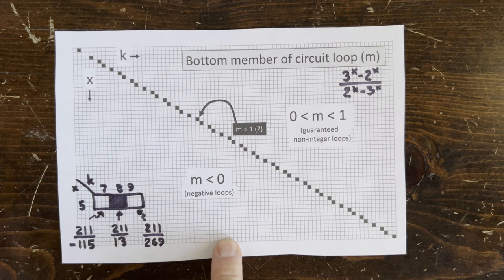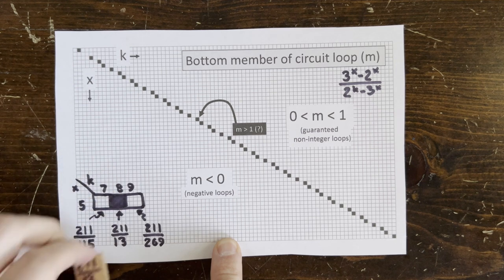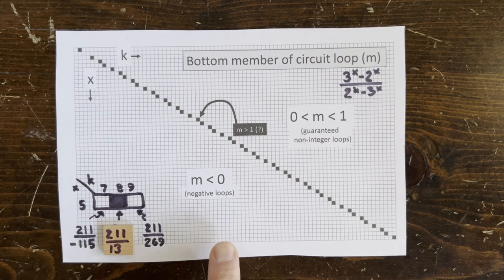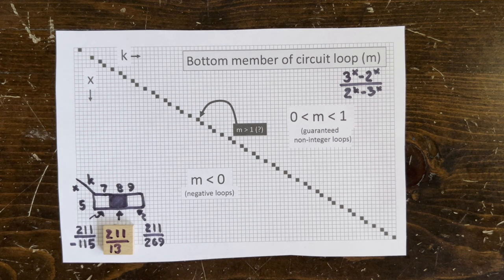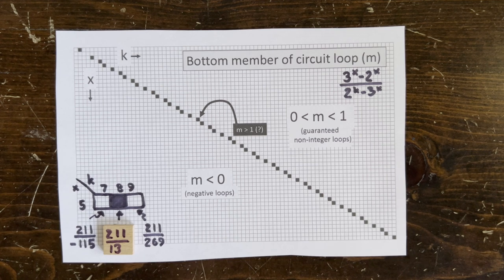So here's our old friend, x equals 5, k equals 8, m equals 211 over 13. Does 13 divide 211 evenly? Yes. I'm just kidding. It doesn't. There's no 3n plus 1 counterexample with length k equals 8.